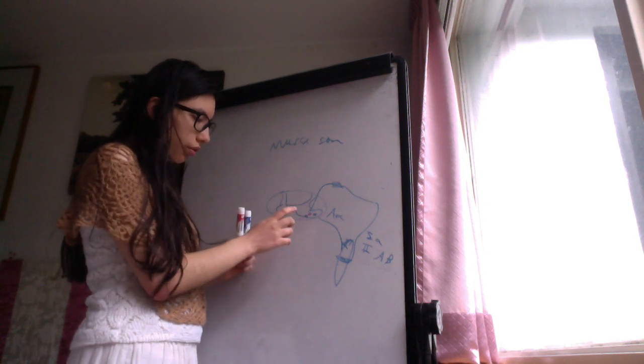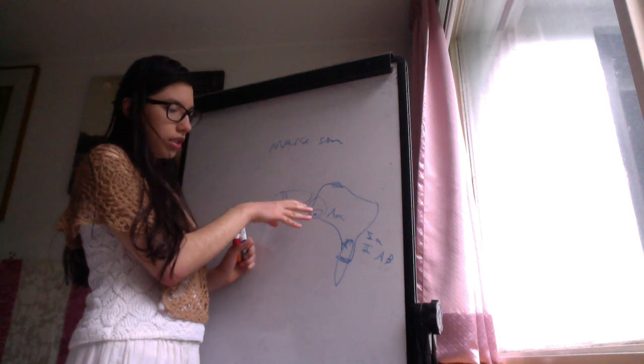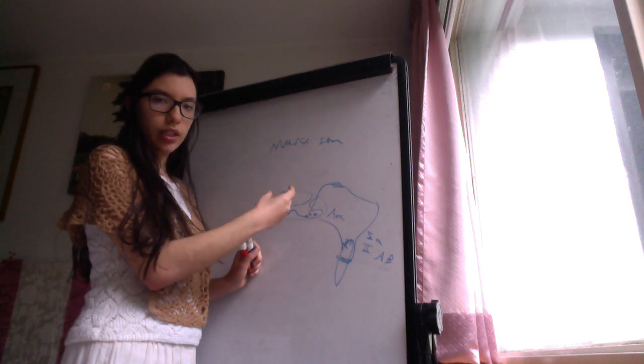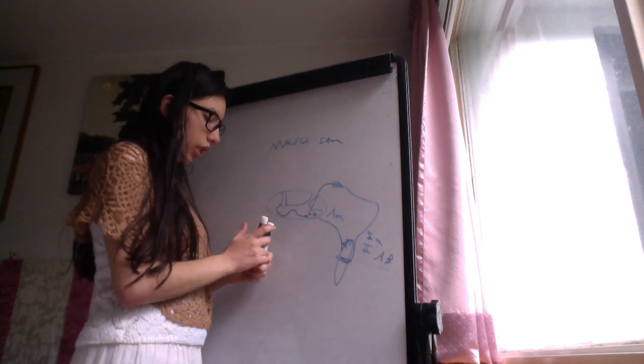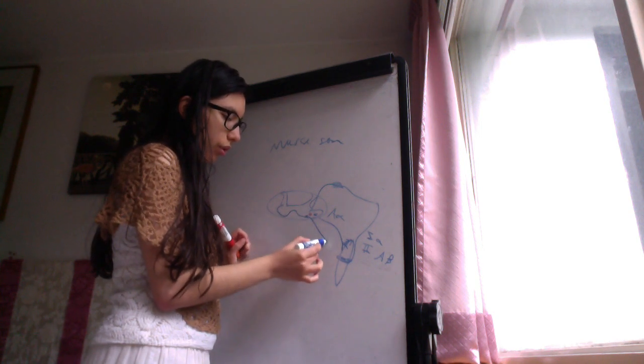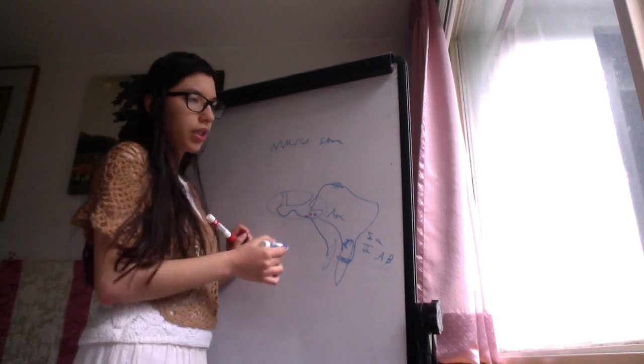But at the same time, it's innervating this interneuron, so it's exciting this interneuron, and the interneuron releases an inhibitory neurotransmitter to this other lower motor neuron, that this lower motor neuron goes to the hamstring muscles.